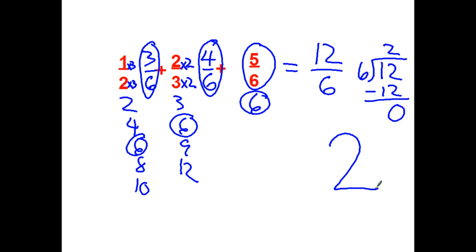So if you had half a pizza and two-thirds of a pizza and five-sixths of a pizza, and you put it all together, you would have two whole pizzas.